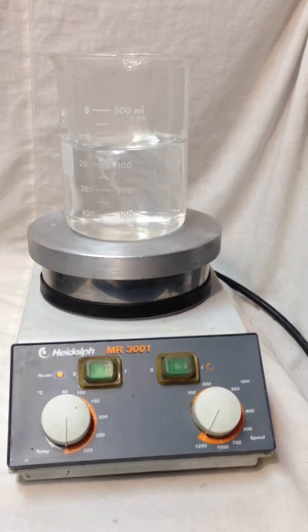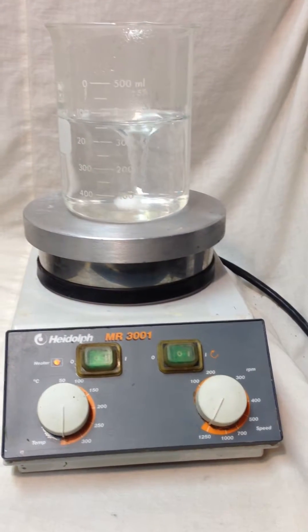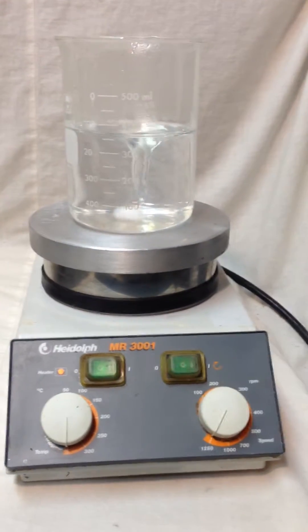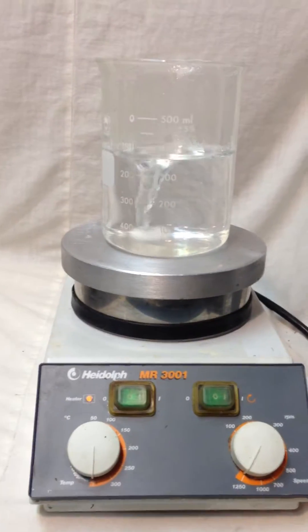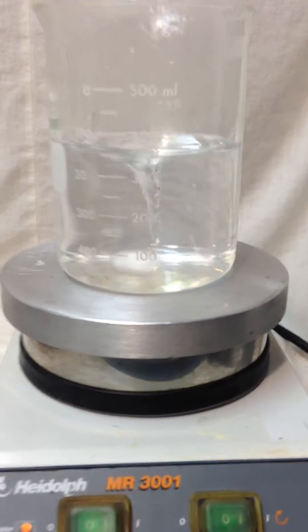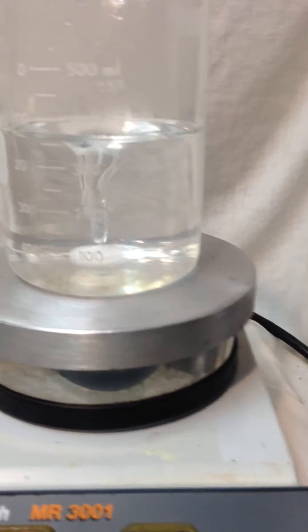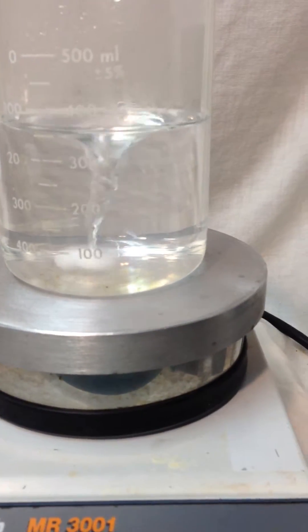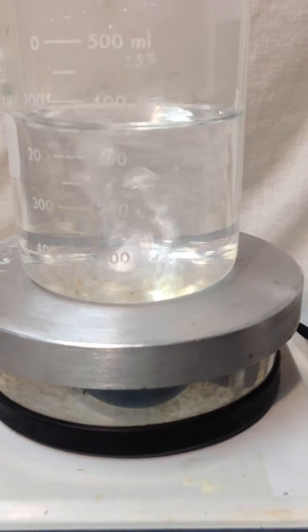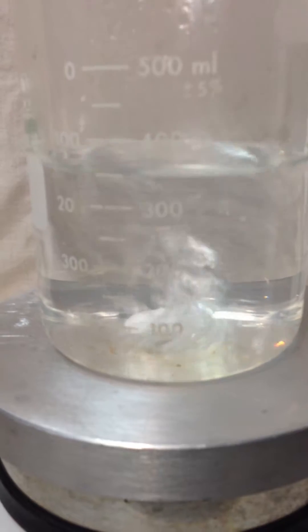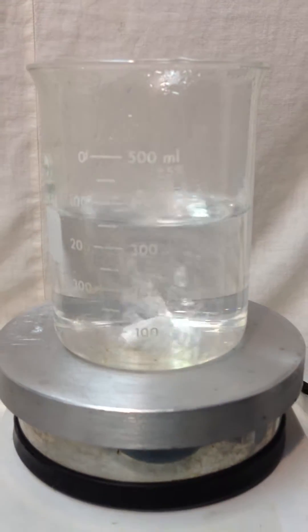Hello everyone, this is Heidolph MR-3001. As you can see, it's starting to boil. Basically, if I turn the stove off, you would see it boiling, so a very good hot plate.